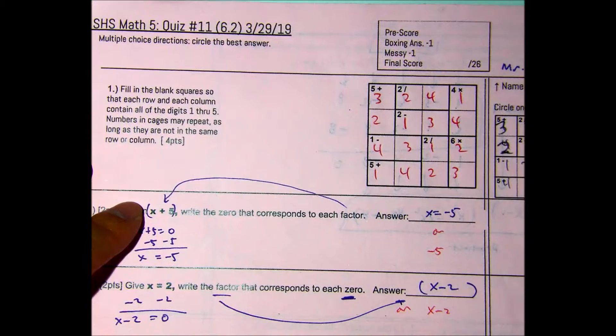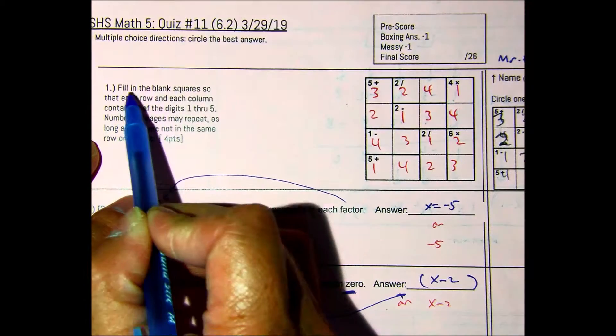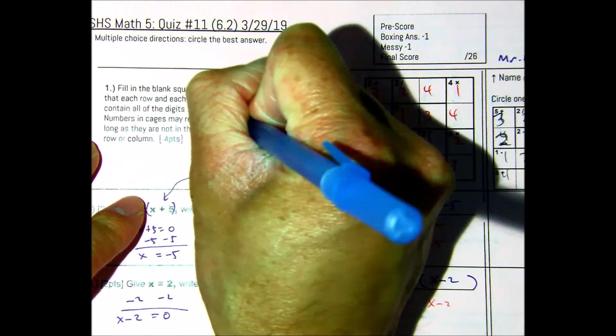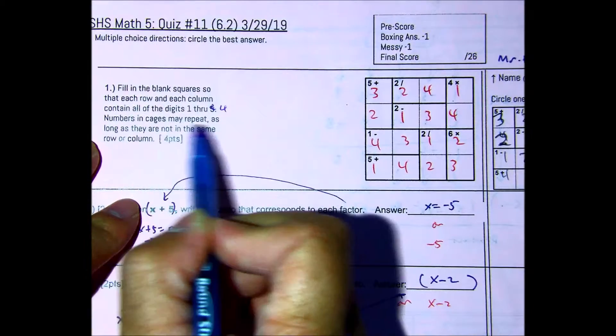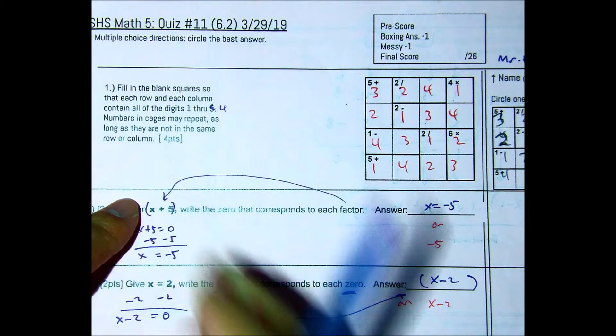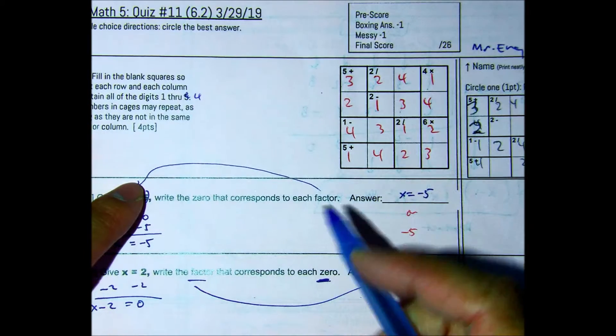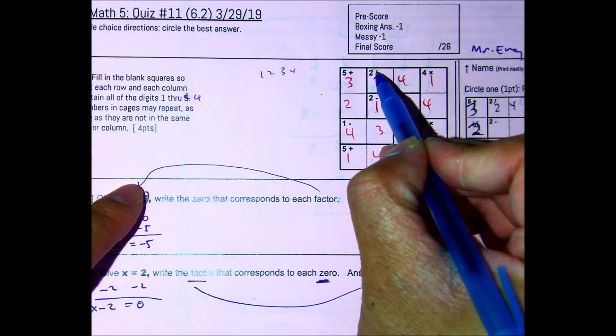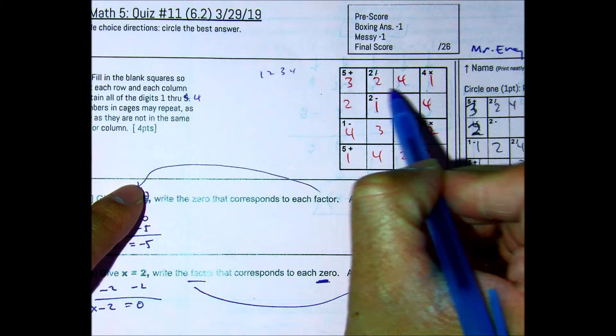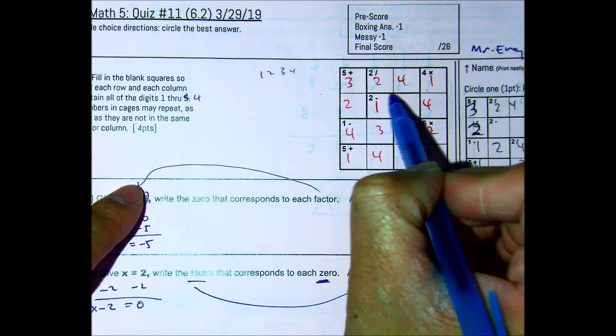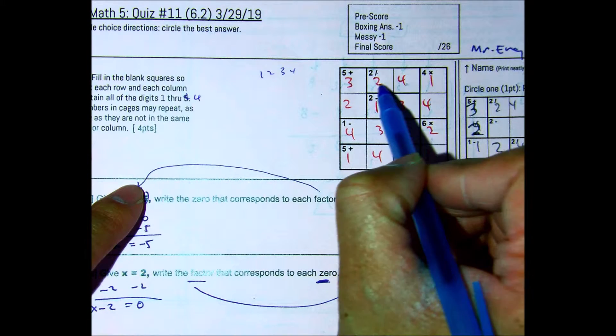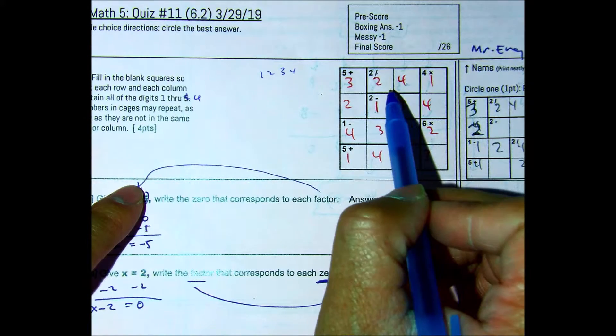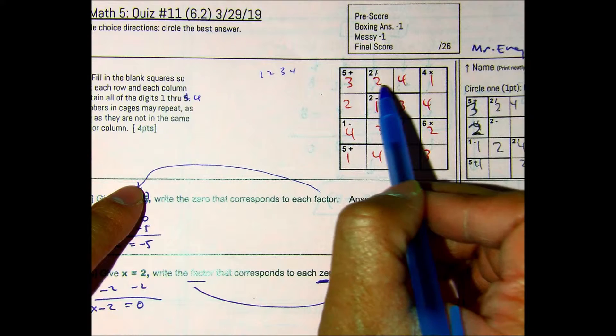So you're asked to do a Ken Ken. Fill in the blank squares so that each row and column contain all the digits 1 to 4. Numbers in the cages may repeat as long as they are not in the same row or column. So we're only using the numbers 1, 2, 3, and 4. And here you have division. So in this cage right here, you know it's a cage because it's darkened. It's okay if you have a line. You'll have to put two numbers here that will divide to be 2. So your only numbers are 4 and 2 and 2 and 1, right?